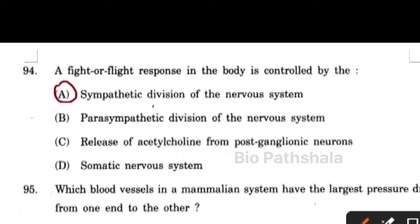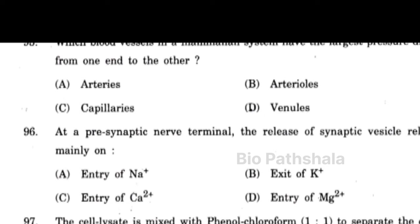Next question: which blood vessel in a mammalian system has the largest pressure drop from one end to another? It will be in the arterioles — they are very small. Next question: at a presynaptic nerve terminal, the release of synaptic vesicles relies mainly on the entry of calcium.